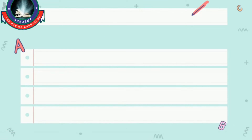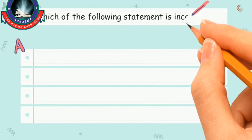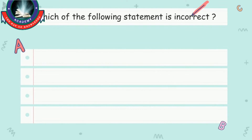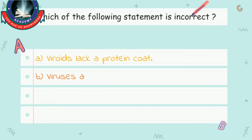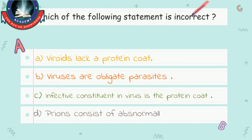The very first question we have on our screen is: Which of the following statements is incorrect? The options are — Option A: viroids lack a protein coat. Option B: viruses are obligate parasites. Option C: the infective constituent in viruses is the protein coat. And Option D: prions consist of abnormally folded protein. Let's discuss each one.